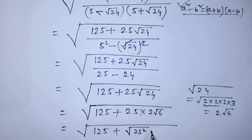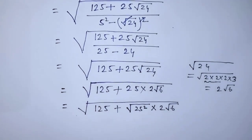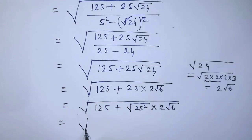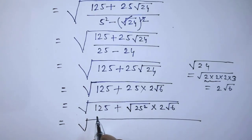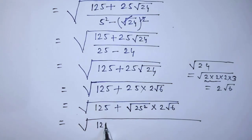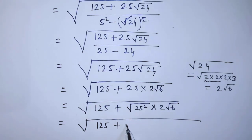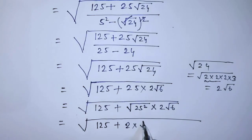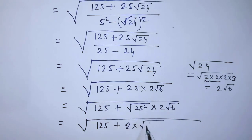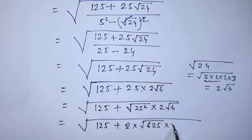We again write the square root and under it we write 125 plus, and arrange these terms. We write 2 times square root of 625 times square root of 6, since the square root of 25 squared equals square root of 625.